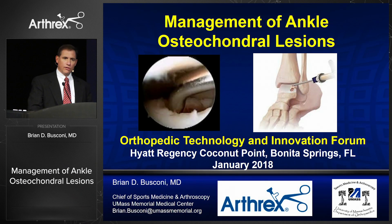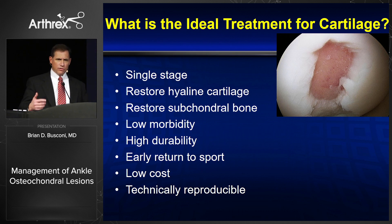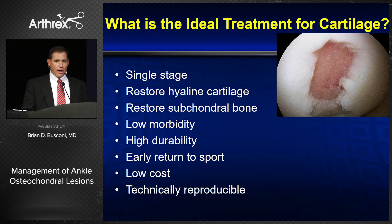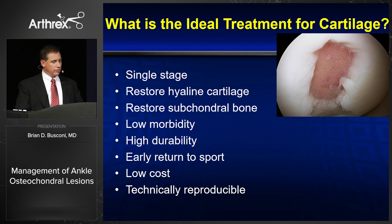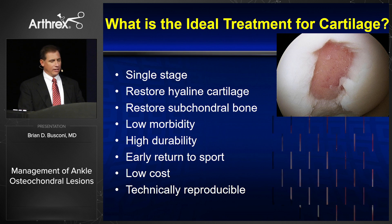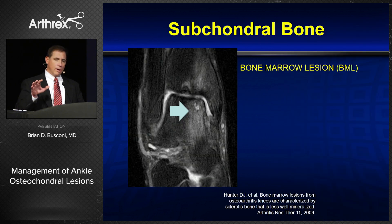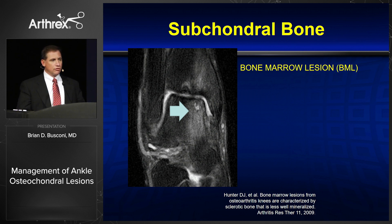My talk today will be on management of ankle osteochondral lesions. They'll go into more depth on what I'm going to talk about, but the ideal treatment for these cartilage lesions is a single stage to restore both the hyaline and subchondral bone and make it technically easy. A large paradigm change in my practice is taking care of the bone marrow problems as well, which I'll introduce and they'll go into in more depth following me.